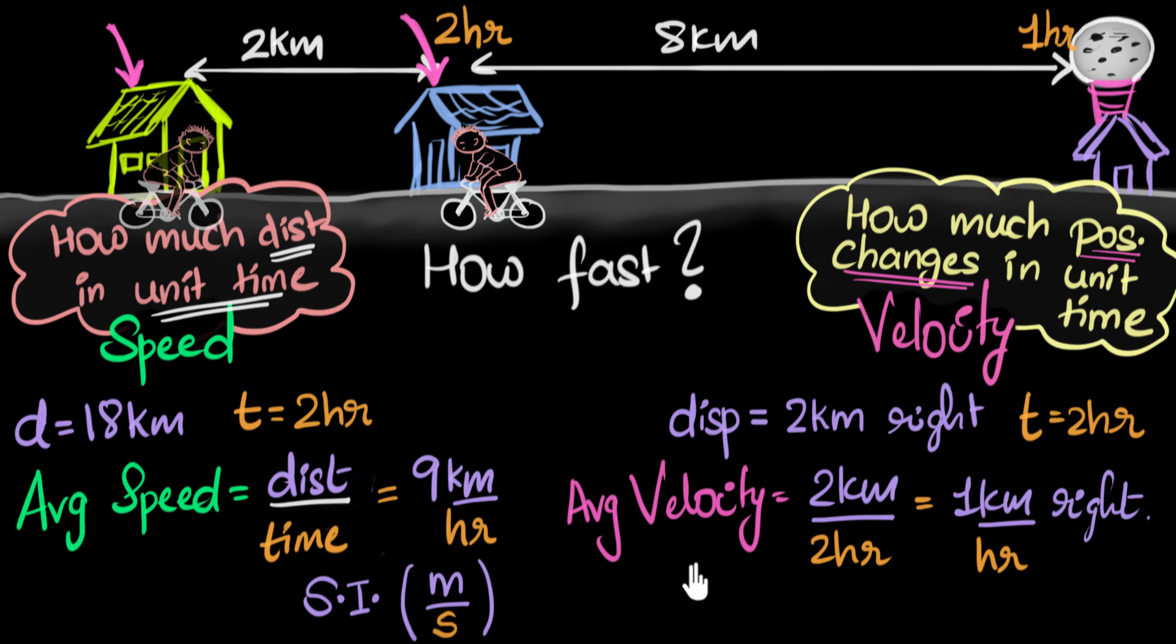And so in general, to calculate average velocity, we have to take displacement and divide it by time. And just like speed, the standard unit for velocity is also meters per second.